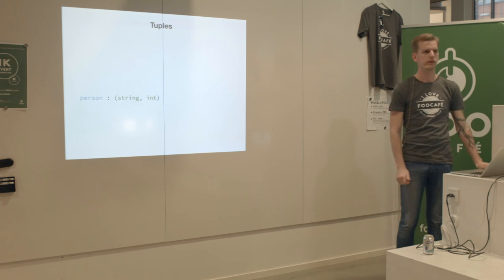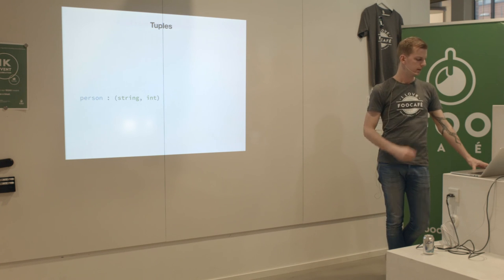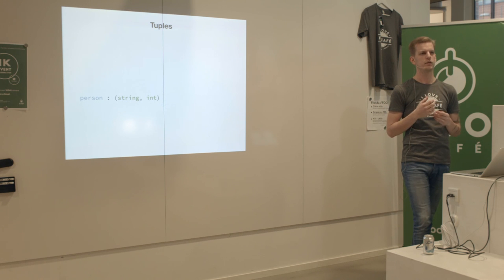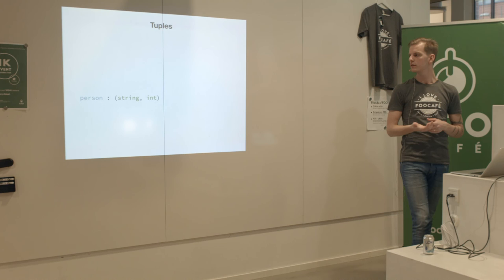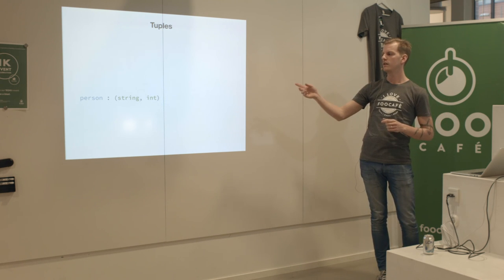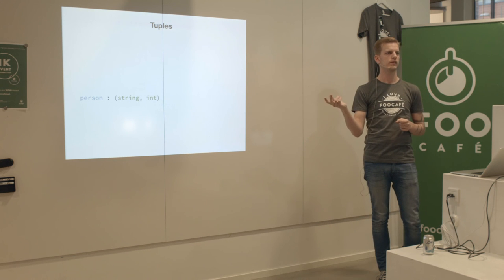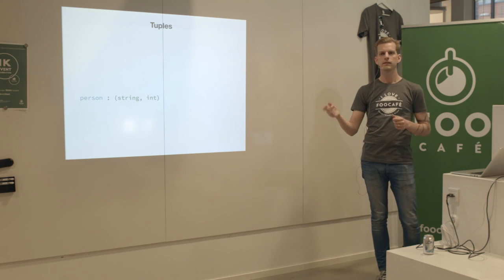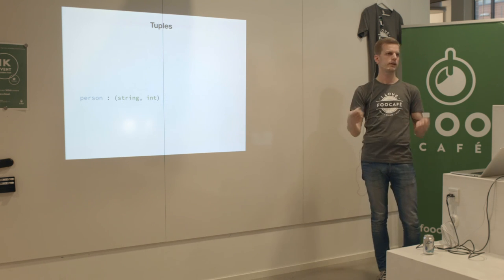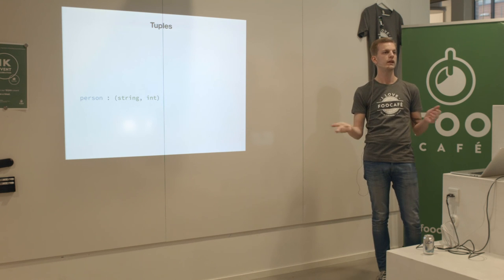There are tuples in Oden - an ordered collection of a fixed number of values where those values can have different types. This 'person' tuple has two elements: one string and one int. A tuple of two elements - string and int - isn't the same type as a three-element tuple of string, int, int. They're distinct types.